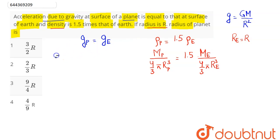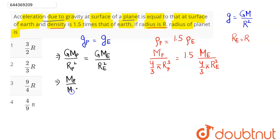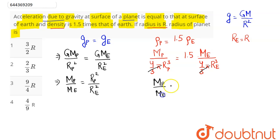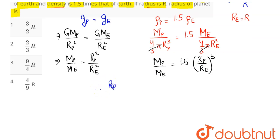From here, gp can be written as G·mp divided by rp squared, which equals G·me divided by re squared. So the ratio mp divided by me equals rp squared divided by re squared. The 4/3 π cancels out, giving mp/me equal to 1.5 times (rp/re) cubed.